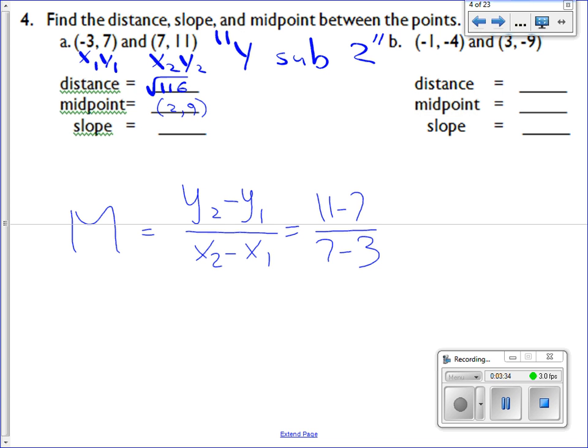There is. It's supposed to be 7 minus negative 3. Okay, change the two negatives to a positive. 11 minus 7 is 4. 7 plus 3 is 10. Reduce that, you get 2/5, and you are done. A lot of students in geometry want to write the fractions as decimals. It's okay to leave them as fractions. We like fractions.